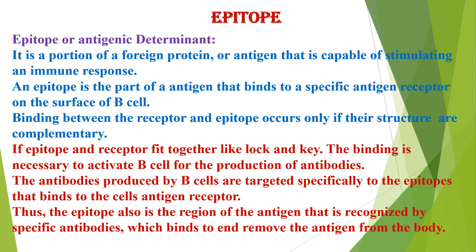Then, what is paratope? The paratope is the corresponding area of the antibody molecule that combines with the epitope — it is called paratope. If the epitope and receptor fit together like lock and key, the binding is necessary to activate B cells for the production of antibodies. The antibodies produced by B cells are targeted specifically to the epitope that binds to the antigen receptor.